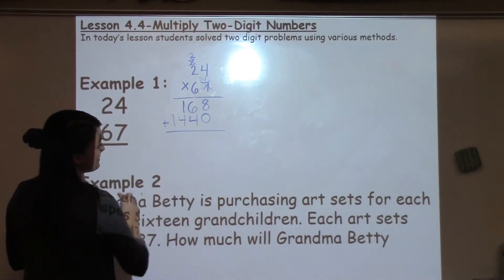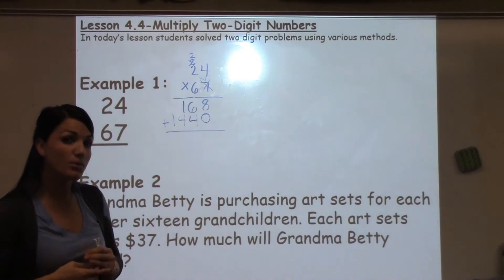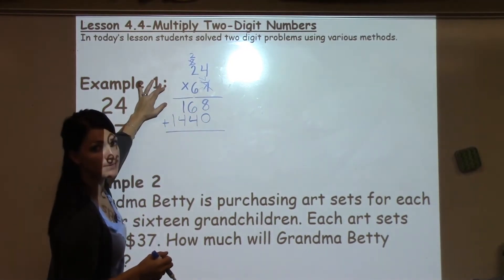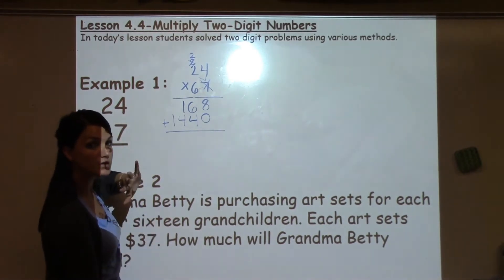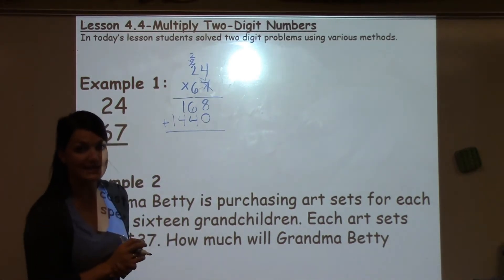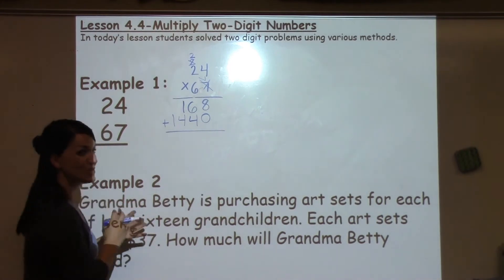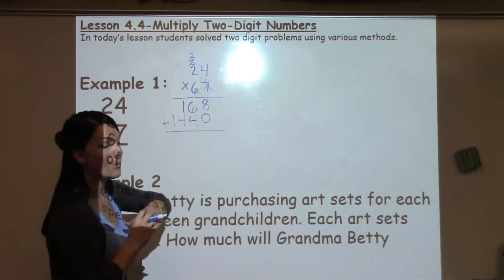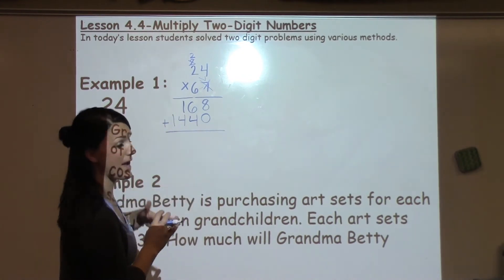Now, something important to remind your student as well is that it's very important to make sure that they have their digits lined up underneath their multiplication problem so they don't get confused about which numbers should be added together. Alright, if they start to rush or have some work that they can't quite tell where the number belongs, they might have to look back at their problem again.